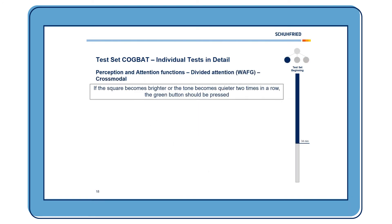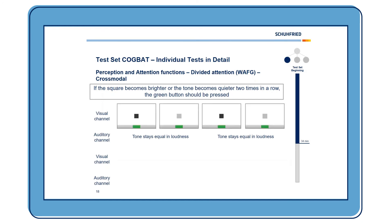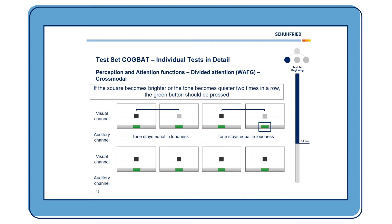The next test measures divided attention in a cross-modal way, across the auditory and visual channels. The task is to press the green button if a square becomes brighter or a tone becomes quieter two times in a row. For example, if in the auditory channel nothing changes but the square becomes brighter twice in a row, the client reacts. Or if the visual channel shows no change but the tone becomes quieter twice in a row, the client also reacts.